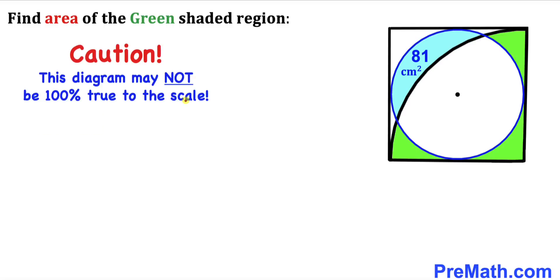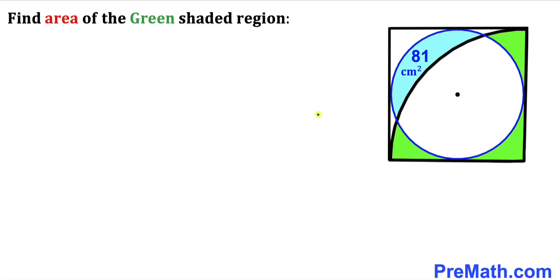Note that this figure may not be 100% true to scale. Let's get started with the solution. Since we are dealing with a square, all corner angles are going to be 90 degrees each.